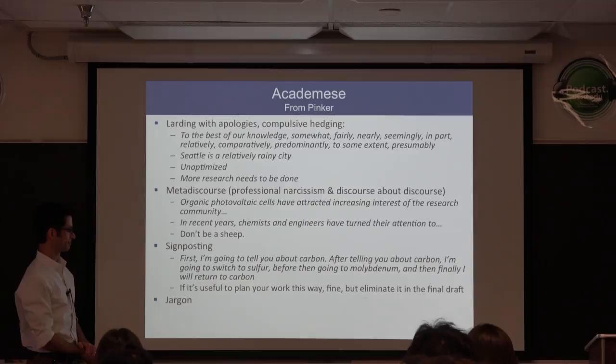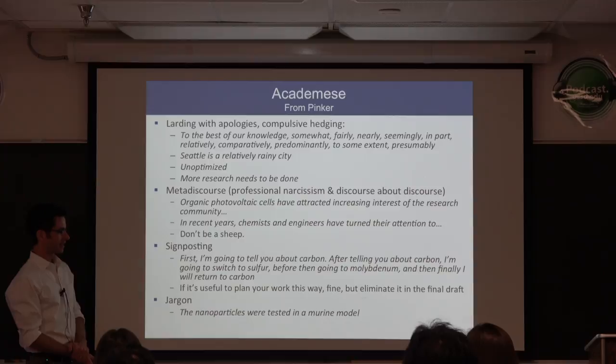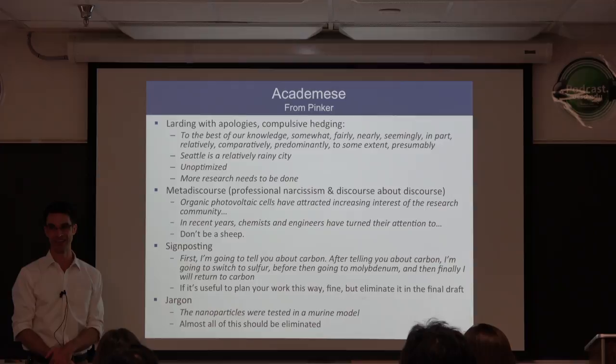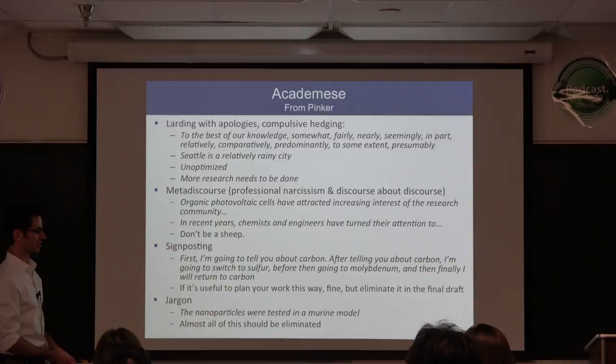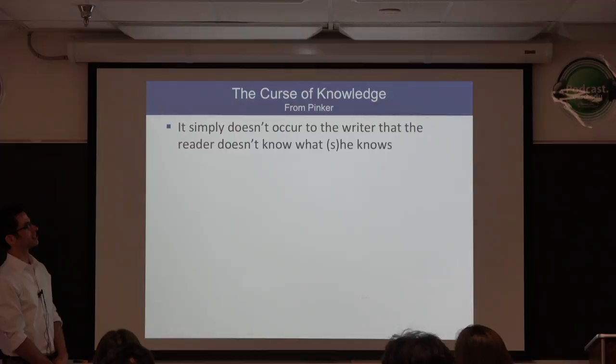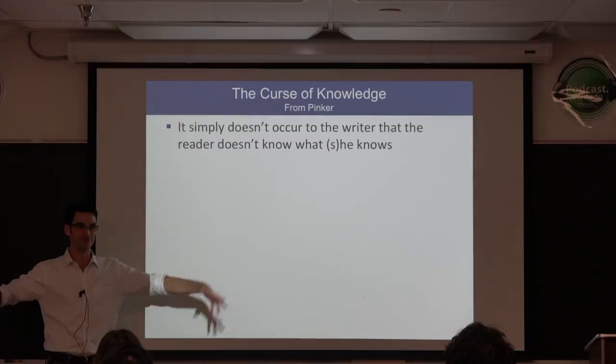Jargon is a particularly bad part of academese. 'The nanoparticles were tested in a murine model' — who knows what a murine model is? It means rats and mice. One might have said so in the first place and saved most readers the time to look it up. Almost all unnecessary jargon should be eliminated. It's impossible for us to know what our readers don't know — the curse of knowledge. It simply doesn't occur to us that the reader doesn't know what we know.